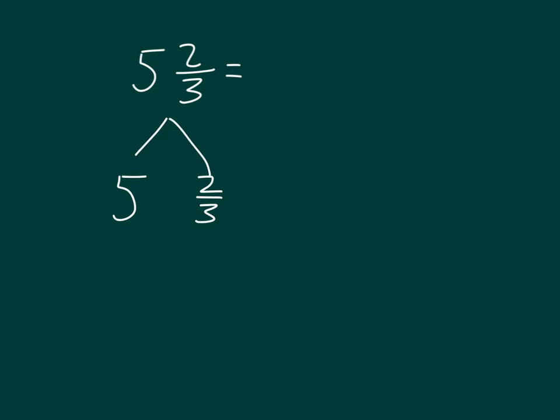Those 5 ones end up equaling 5 times 3 thirds. 5 times 3 thirds because, remember, 3 thirds does equal 1. 3 thirds times 5. So, how many total thirds are there? Well, that's 5 times 3, which is 15. So, there's 15 thirds within those 5 ones.